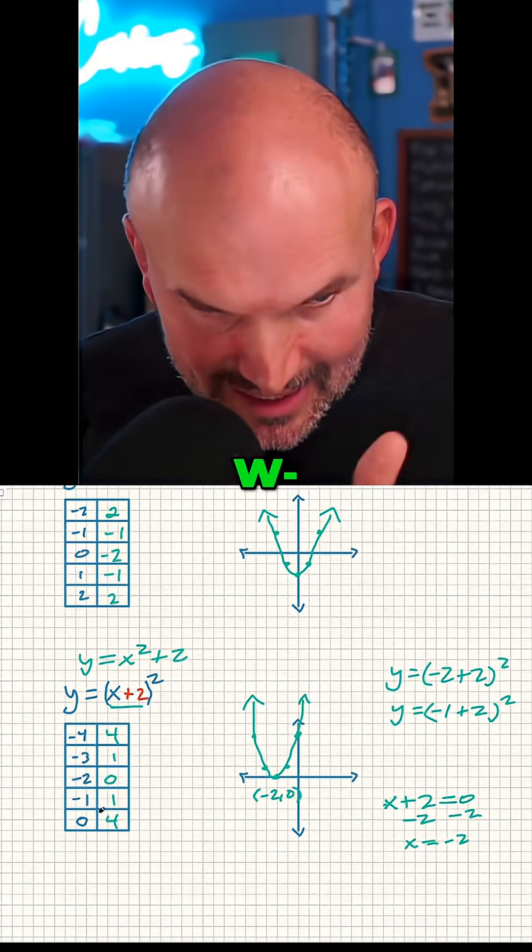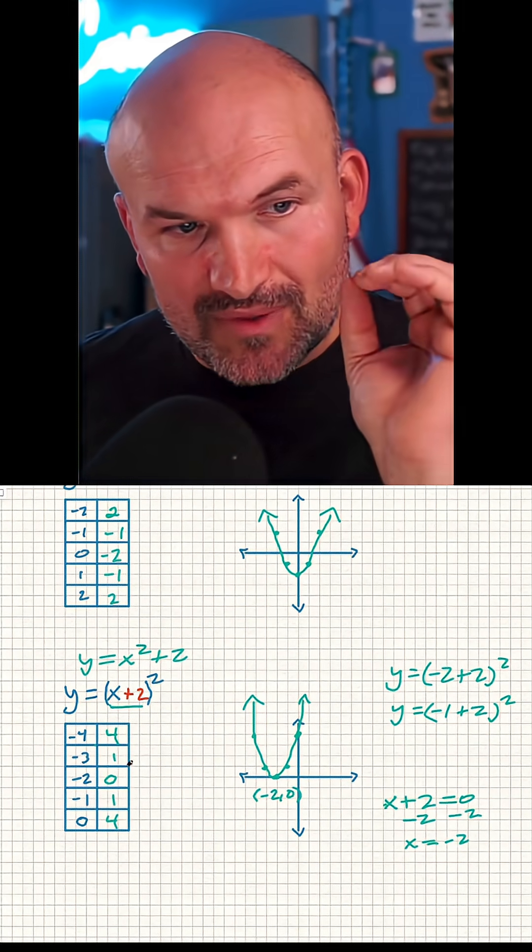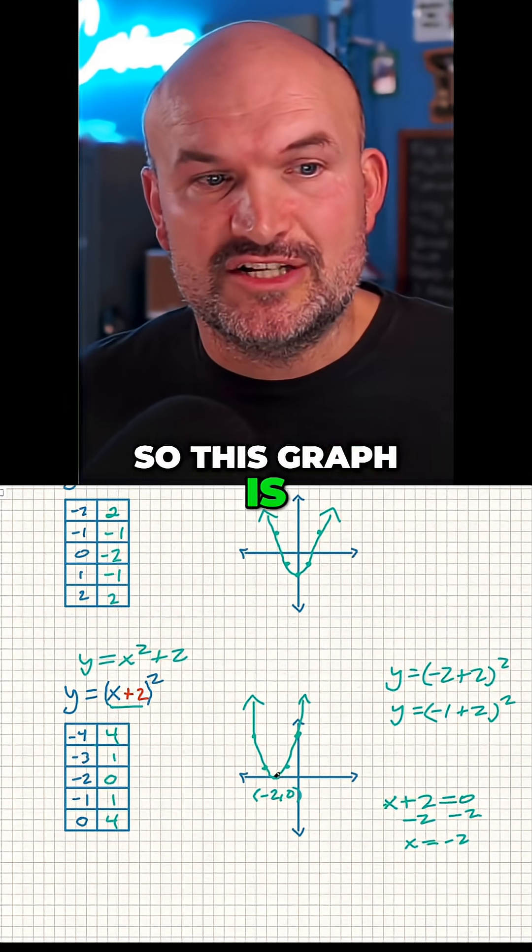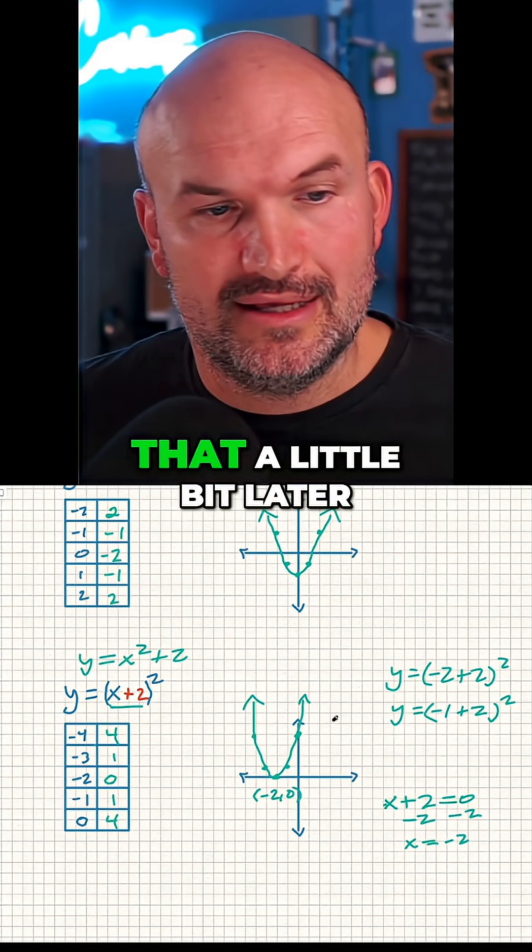But actually, you can see when I plug in negative two, that gives me the vertex. So this graph is actually shifting two units to the left. It's the opposite, and I'll get to that a little bit later.